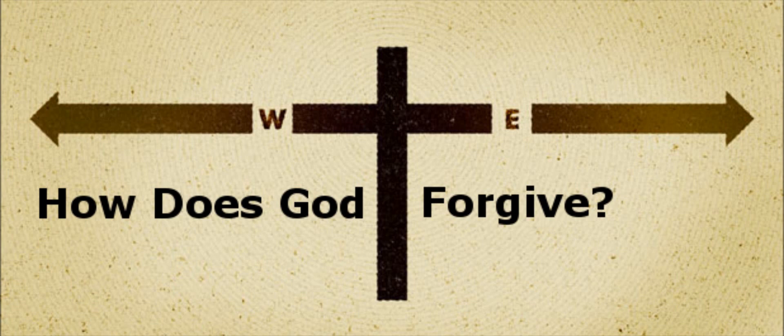Psalms 32, verse 3. When I kept silence, my bones waxed old through my roaring all the day long. For day and night thy hand was heavy upon me. My moisture is turned into the drought of summer. David sang, As I was holding my sin within, there was incredible torment and pain. Psalms 32 is believed to have been written right after Psalms 51, which most of us are very familiar with, David's big confession about his sin with Bathsheba. And as we look at verse 5, we see the base of the forgiveness that he was given. David said, I acknowledge my sin unto thee, and mine iniquity have I not hid. I said, I will confess my transgressions unto the Lord, and thou forgavest the iniquity of my sin.